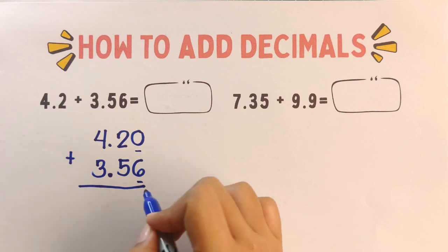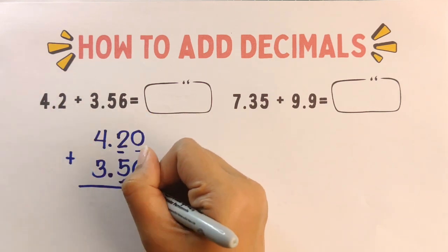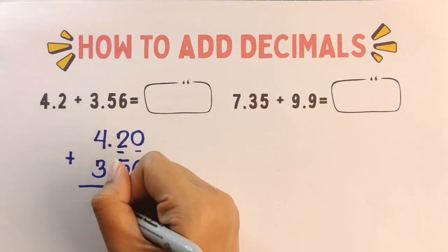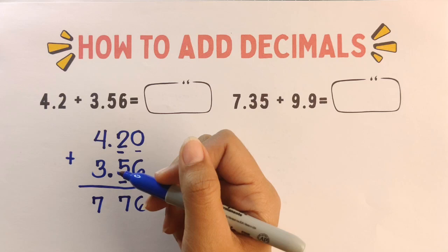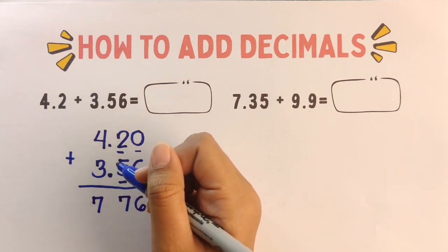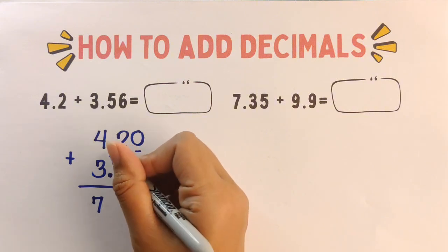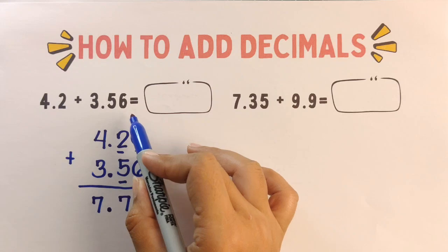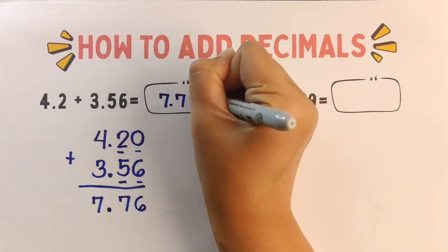Okay, so zero plus six equals six, two plus five equals seven, four plus three equals seven. Step number three: bring down the decimal point. Make sure you bring the decimal point straight down into the answer. So 4.2 plus 3.56, the final answer is 7.76.